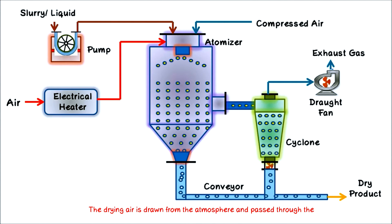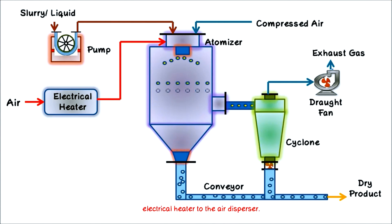The drying air is drawn from the atmosphere and passed through the electrical heater to the air disperser.